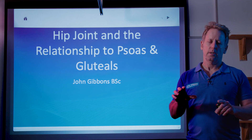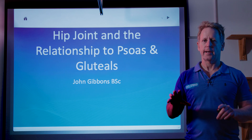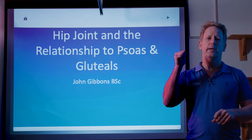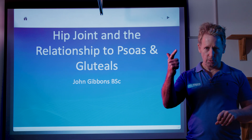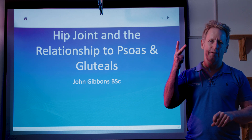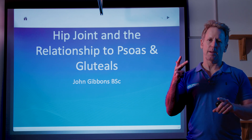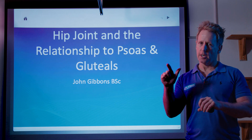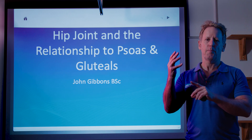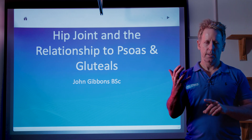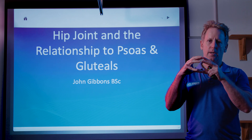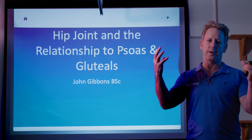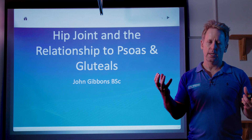If you've got any hip joint pathology — that could be osteoarthritis, it could be a labral tear, you could have an FAI which is a femoral acetabular impingement, a cam and pincer type, or you might have a piriformis issue — any problem within the hip joint is naturally going to affect the musculature around it.